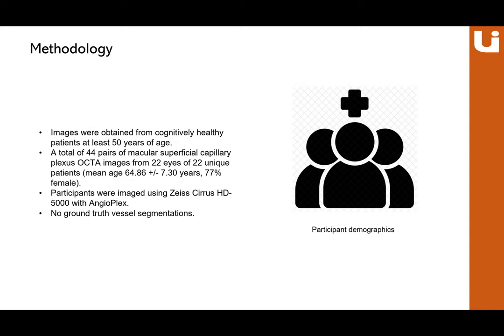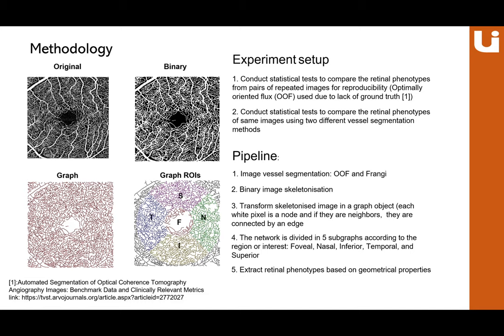The experiment had two parts. The first was to conduct statistical tests comparing retinal phenotypes from pairs of repeated images, using the Optimally Oriented Flux (OOF) algorithm for vessel segmentation — chosen because it performs well and outperforms other vessel enhancement methods in the absence of ground truth. The second part was to conduct statistical tests comparing retinal phenotypes of the same images using two different segmentation methods: OOF and Frangi.